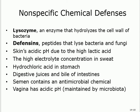Semen contains antimicrobial agents — chemicals that will break down or kill pathogens in the semen. The vagina is acidic, and this acidity is maintained by the microbiota — the normal flora. Specifically, Lactobacillus produces lactic acid, making the vaginal environment acidic. Lactobacillus is one of the normal flora of the vagina.